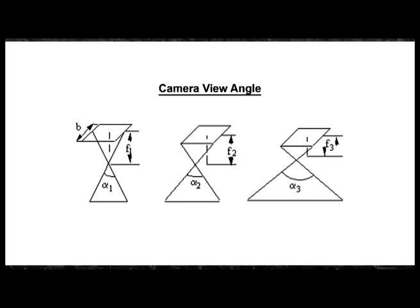View angle is normally determined by the focal length of the camera lens and the frame size of the film. For a camera, the frame is fixed. Therefore, the ground coverage is determined by the altitude and the camera viewing angle. Obviously, wide angles allow a larger area to be photographed.